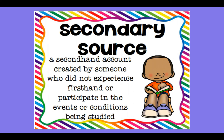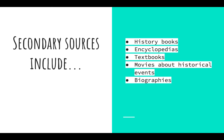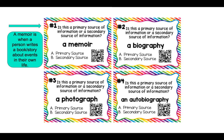A secondary source is a second-hand account. It's created by someone who did not experience it firsthand or did not participate in the events being studied. Secondary sources include things like history books, textbooks, movies about historical events, and biographies — people who were not there at the time but studied primary sources in order to analyze and write their own opinion about it.